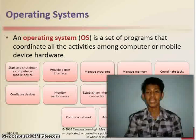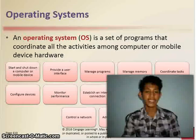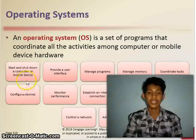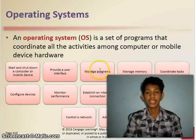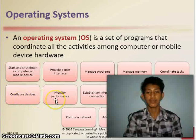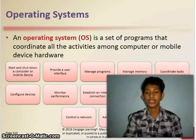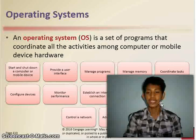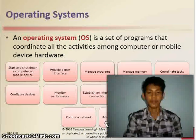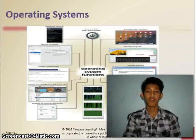An operating system, or OS, is a set of programs that coordinate all the activities among computers or mobile devices. Its functions include: start and shutdown a computer or mobile device, provide a user interface, manage programs, manage memory, coordinate tasks, configure devices, monitor performance, establish an internet connection, provide file management and other device or media related tasks, update operating system software, control a network, and administer security. These are examples of an operating system.